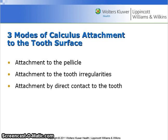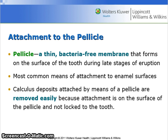Calculus can attach to the tooth surface by attaching to the pellicle, attaching to irregularities in the tooth surface, or by direct contact of the calcified component and the tooth surface. Calculus can also attach directly to the calcified component of the tooth, where the matrix of the calculus deposit is interlocked with the inorganic crystals of the tooth. Deposits firmly interlocked in the tooth surface are usually very difficult to remove. Attachment of calculus to the pellicle is easily removed because the attachment is on the surface of the pellicle and is not locked to the tooth.